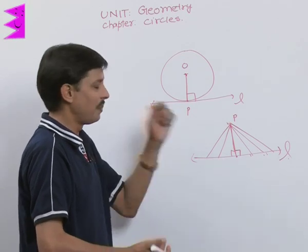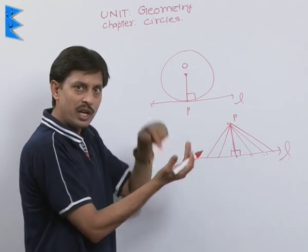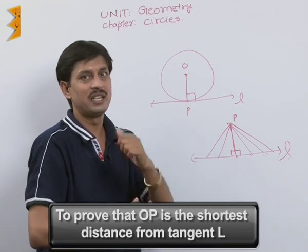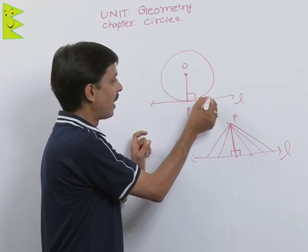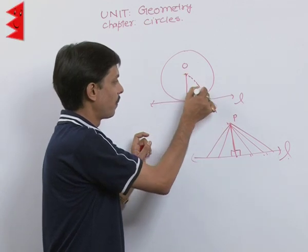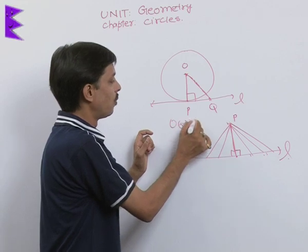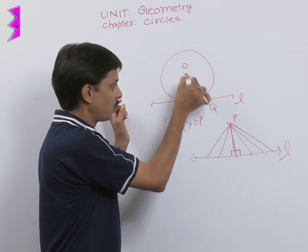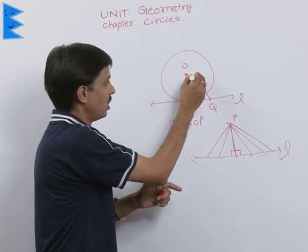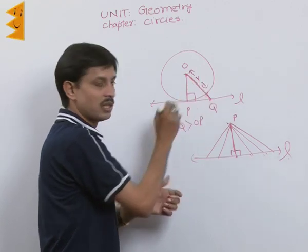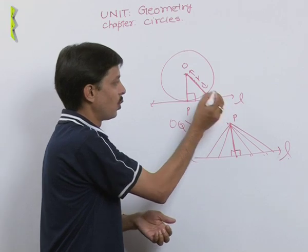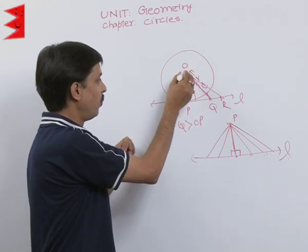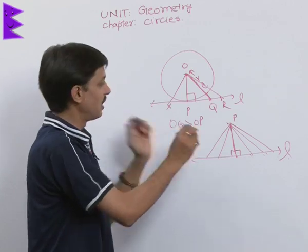We need to prove that OP is the shortest distance to this line L, the tangent. If I join any other point Q from O, this length OQ is more than OP because we are coming out of the circle. If we take point R, or point X, these are also more than the radius. So OP is the shortest length.